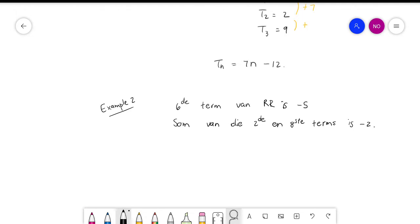Let's write down what we have. Term 6 is equal to minus 5. How can I express term 6 in terms of a and d? A plus 5d. Are we okay?